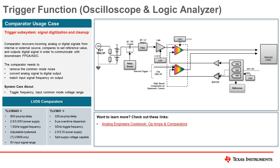Another common application is for a trigger function within a logic analyzer or oscilloscope. Both end equipment have a similar problem to solve: they must sample an incoming signal, compare it to a set reference value, and then trigger at the appropriate moment when the desired signal is detected. Typically, the input signal undergoes some conditioning, such as a filter or amplifier, before reaching the comparator. Meanwhile, the comparator receives an analog reference signal from a digital-to-analog converter controlled by the user to set the desired trip point. In both the oscilloscope and logic analyzer, the key application is detection of a pulse by making a comparison between the set voltage value and the input signal, which can be achieved using a standard comparator.